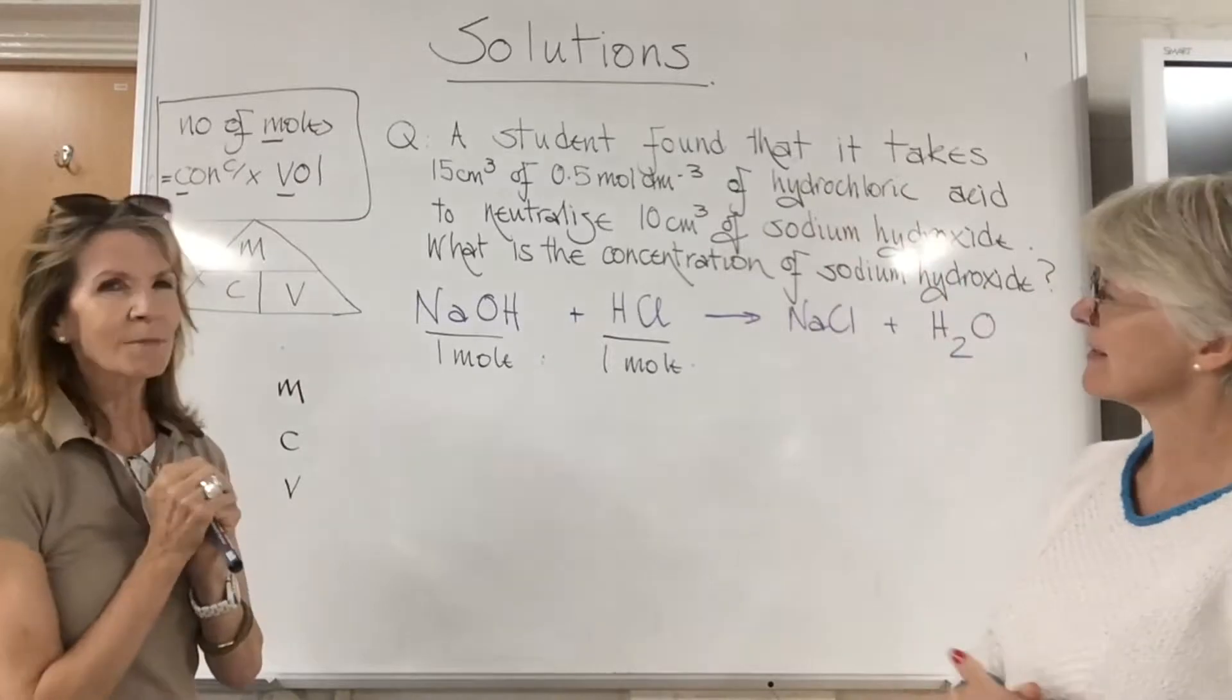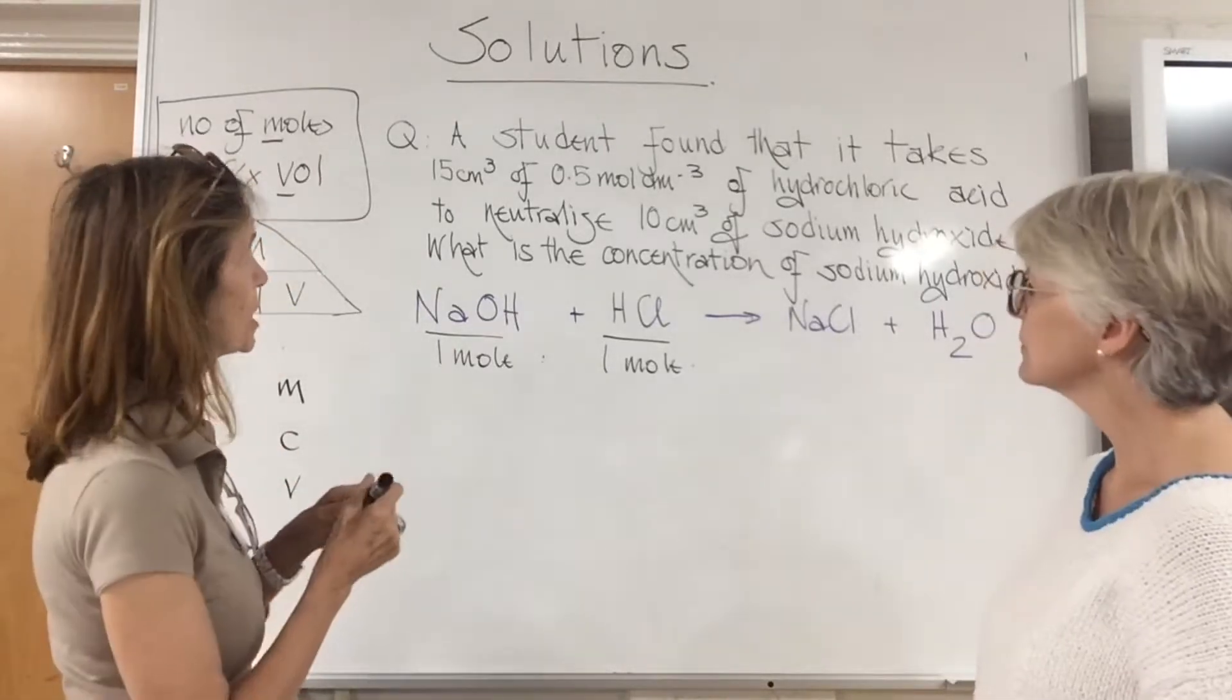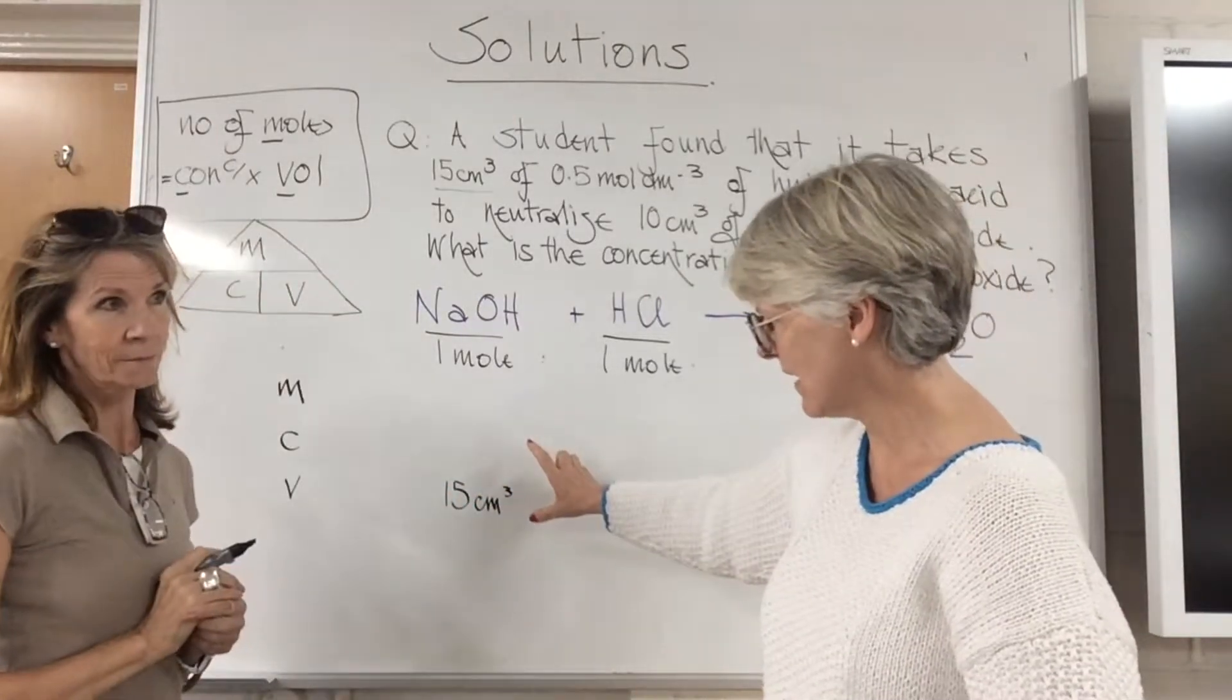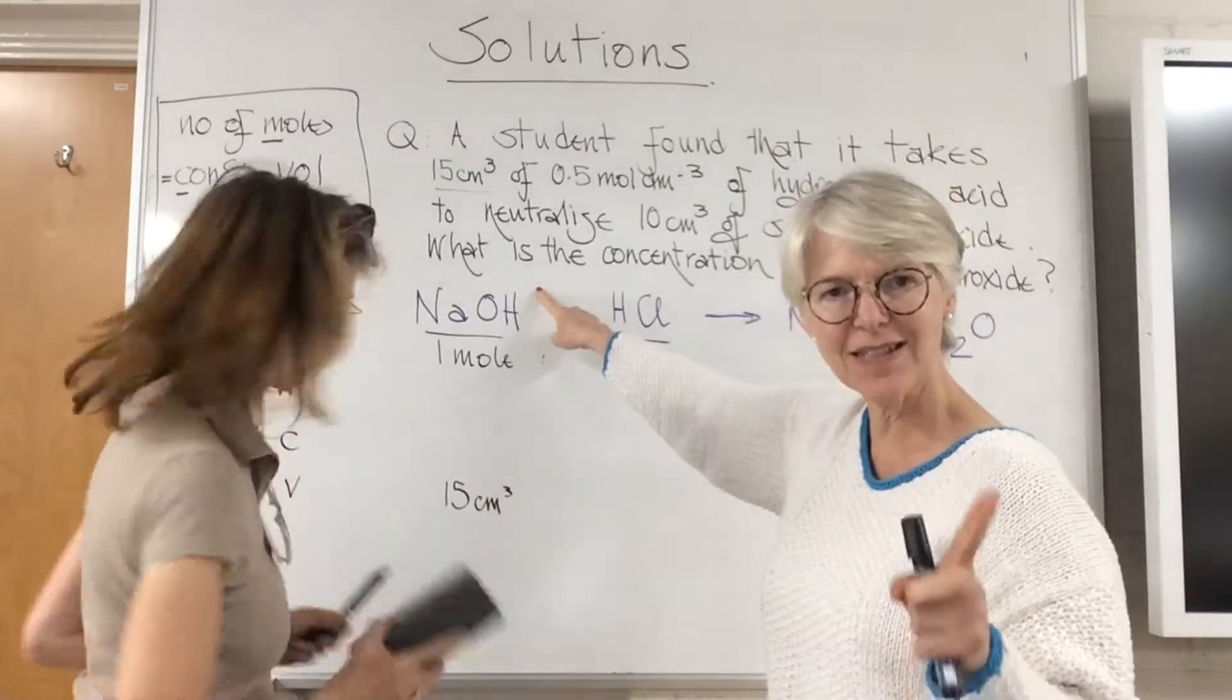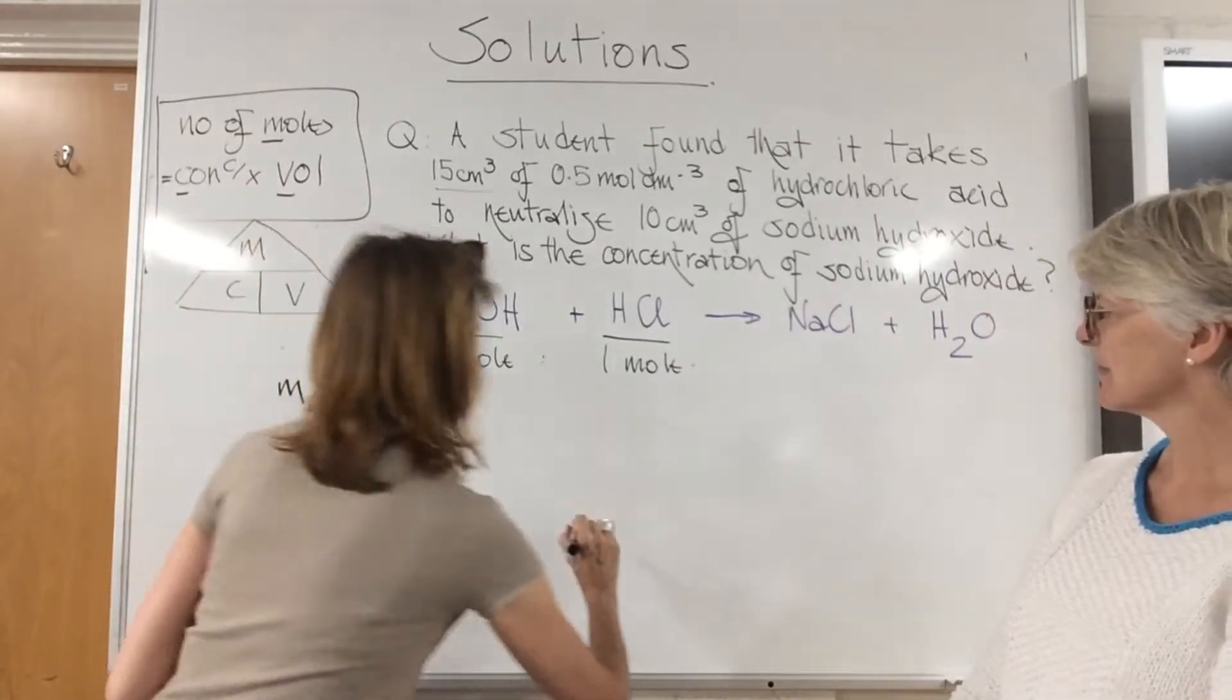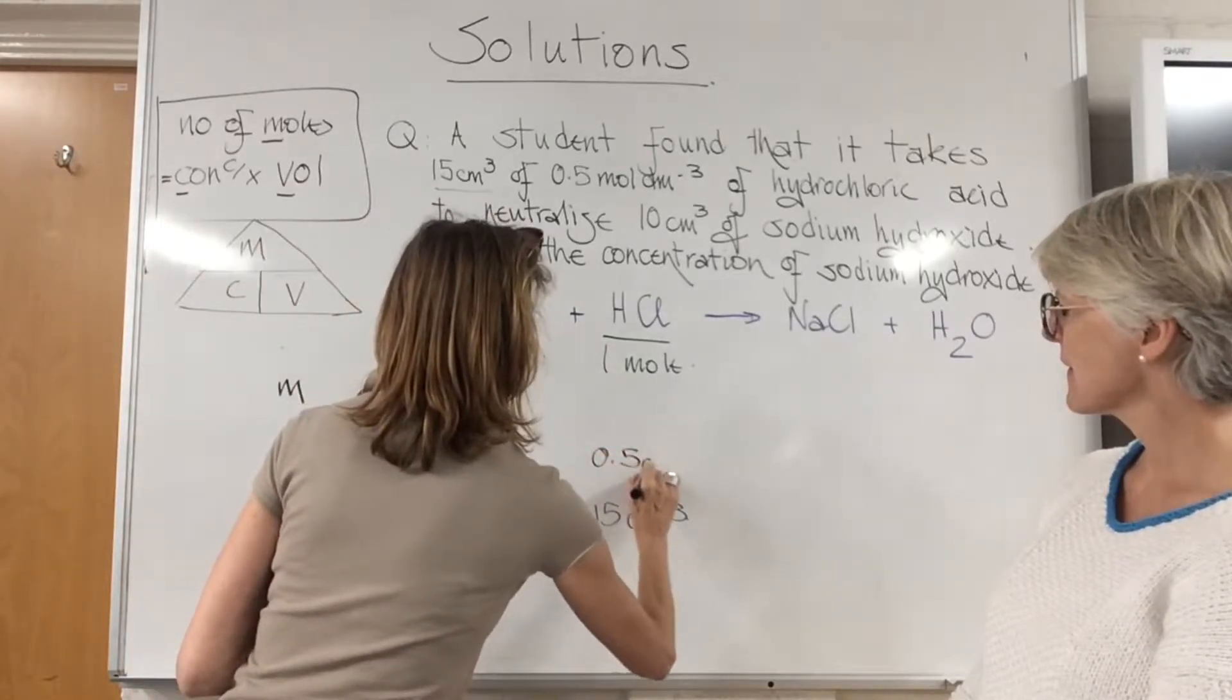Starting with the hydrochloric acid. The first thing is I'm going to look at the question and find out what gives me the most information. I can see it's hydrochloric acid because we have 15 cm³. Now I want to point something out: this is a very easy thing to do, filling it in under the sodium hydroxide column. You have to fill it in under the hydrochloric acid column.